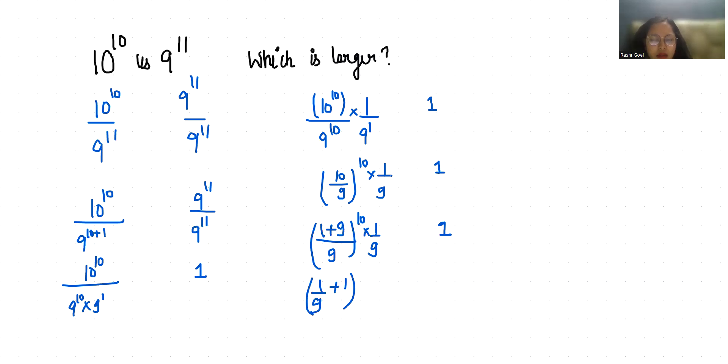So 1 plus 1 by 9 whole power 10 times 1 by 9. I can write 1 by 9 whole power 10 as 1 plus 1 by 9 whole power 9 times 1 plus 1 by 9.